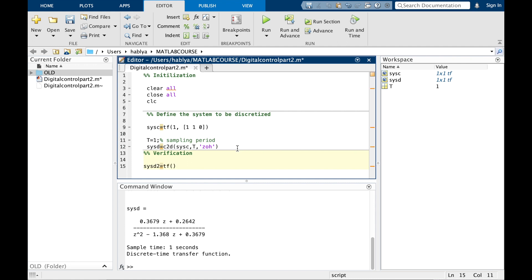I want to verify what I get manually, so I will create system d2. I will write what I have developed before.